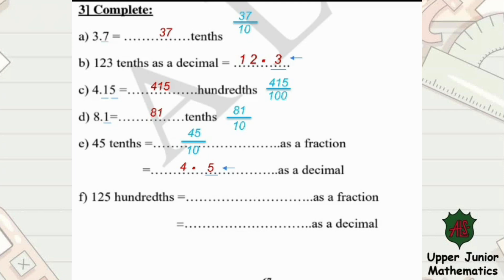125 hundredths equals what as a fraction? The word 'hundredth' means over 100, and write the 125 up. To write it as a decimal, look at the fraction form — your denominator is 100, so you have two places after the point. Starting from the right side, write the 5, then the 2. No more places, so the 1 will be written as a whole number.